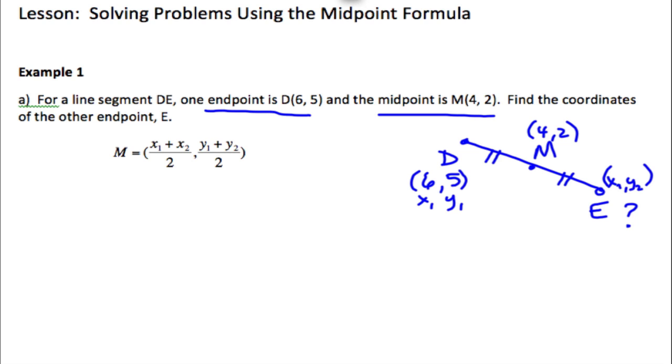So what we're going to do, we're going to sub in the information that we do know into the equation. We have a nice formula here. Midpoint is 4, 2. So we would actually sub midpoint 4, 2 in for midpoint because it's kind of like we already have the answer for midpoint. But we're missing X2 and Y2.